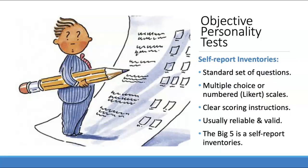Objective personality tests are probably the most common approach to assessing personality, specifically self-report inventories, which are basically questionnaires. With self-report personality inventories, individuals are given a standard set of questions to answer about themselves. These are usually either multiple choice or a numbered Likert scale — they might be in the form of yes/no, true/false, or agree/disagree.